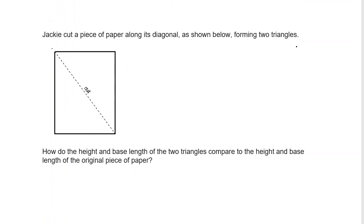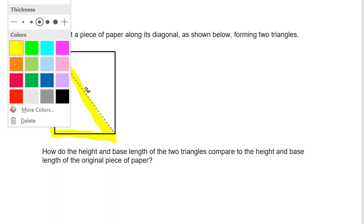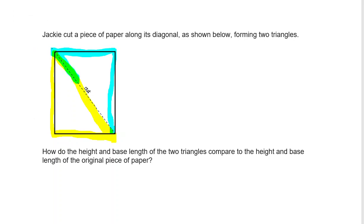Jacki cut a piece of paper along its diagonal, creating two triangles — here's triangle 1 and here's triangle 2. How do the height and base length of the two triangles compare to the height and base length of the original piece of paper? The diagonal is not our height or our base, because our height and base have to form a right angle. We see a right angle here, but that corner was cut by the diagonal.